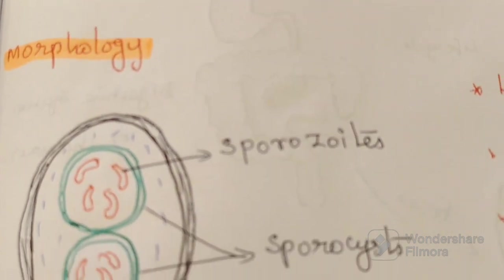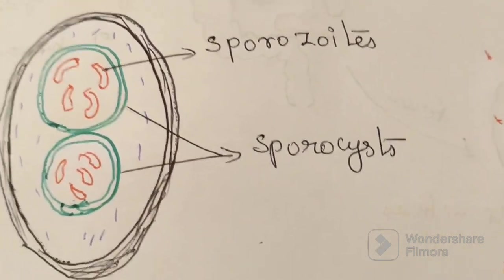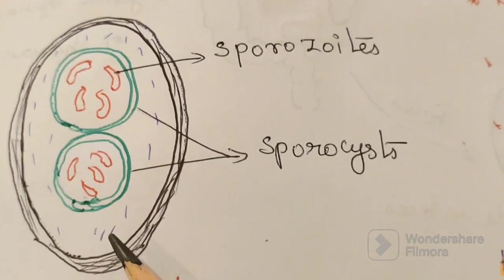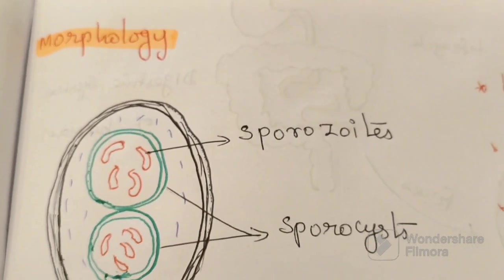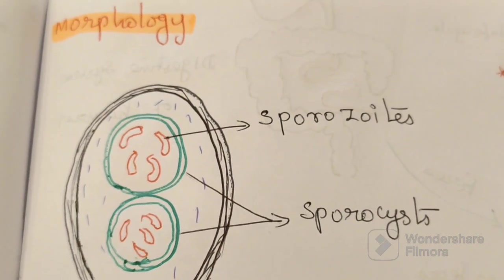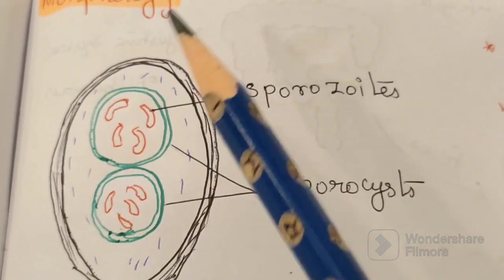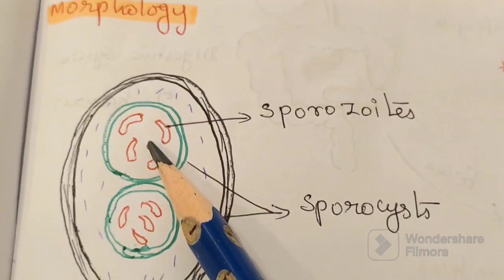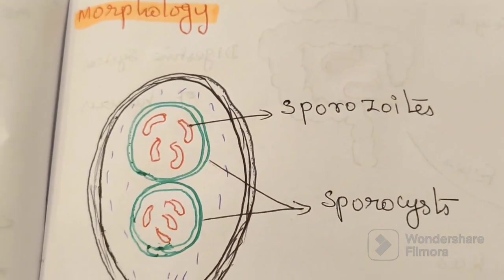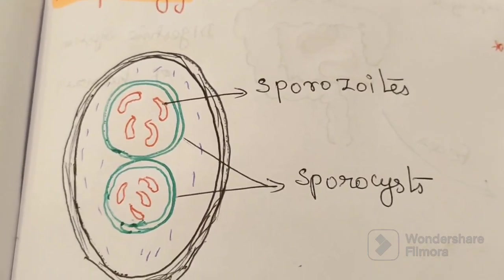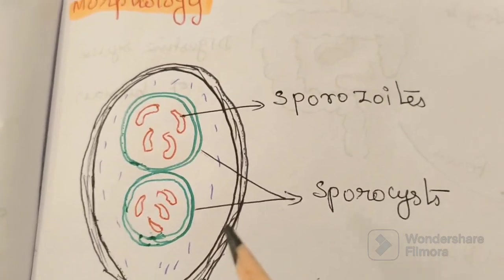Morphology. Here, this is the mature oocyst. In an immature oocyst, the sporocysts are not completely developed. But in the case of a mature oocyst, the sporocysts are completely developed. It has two sporocysts.